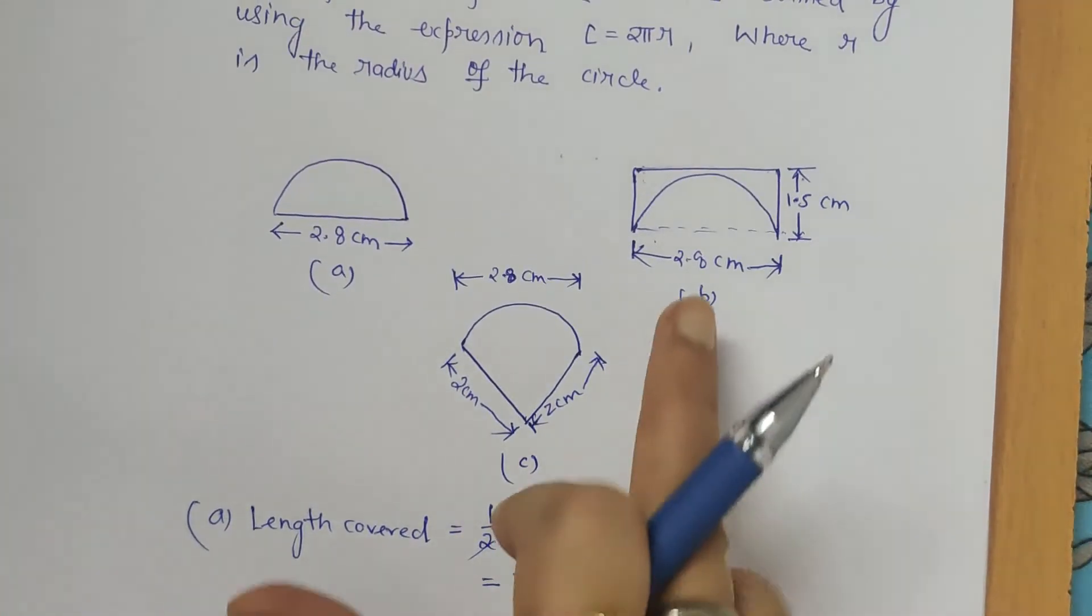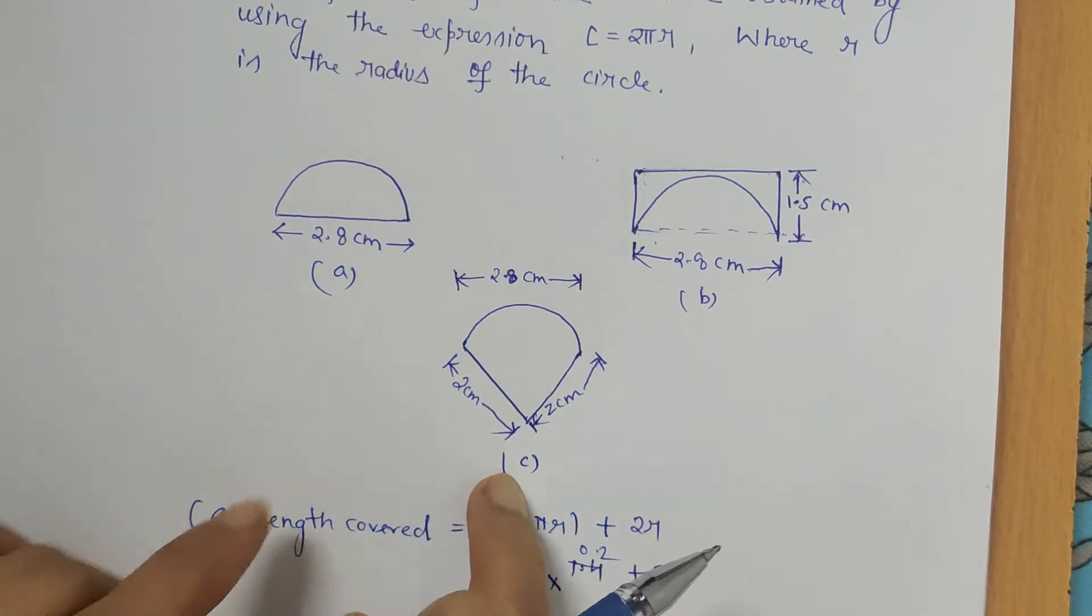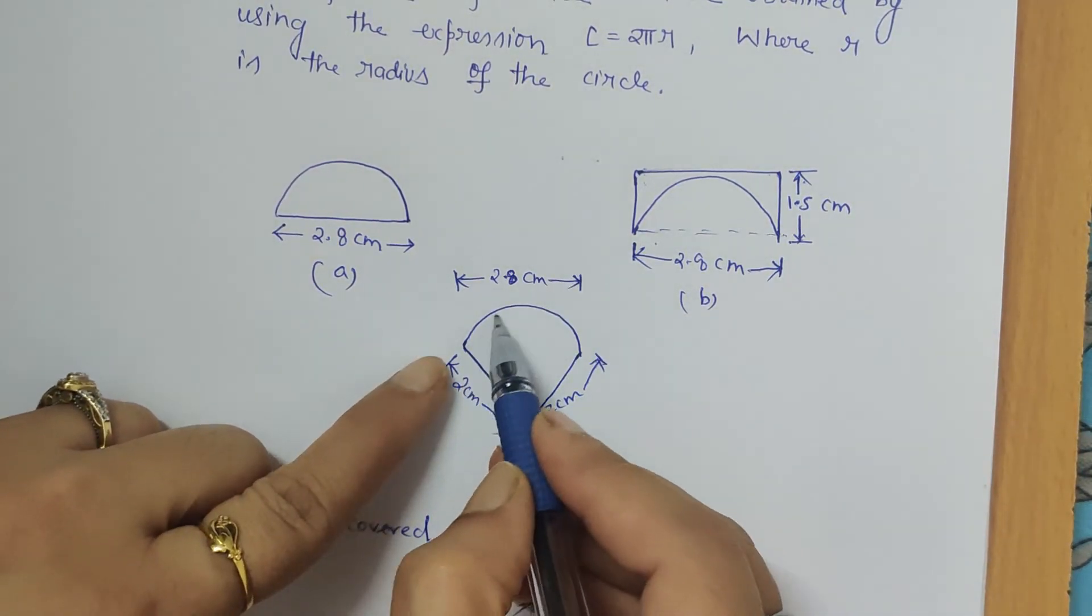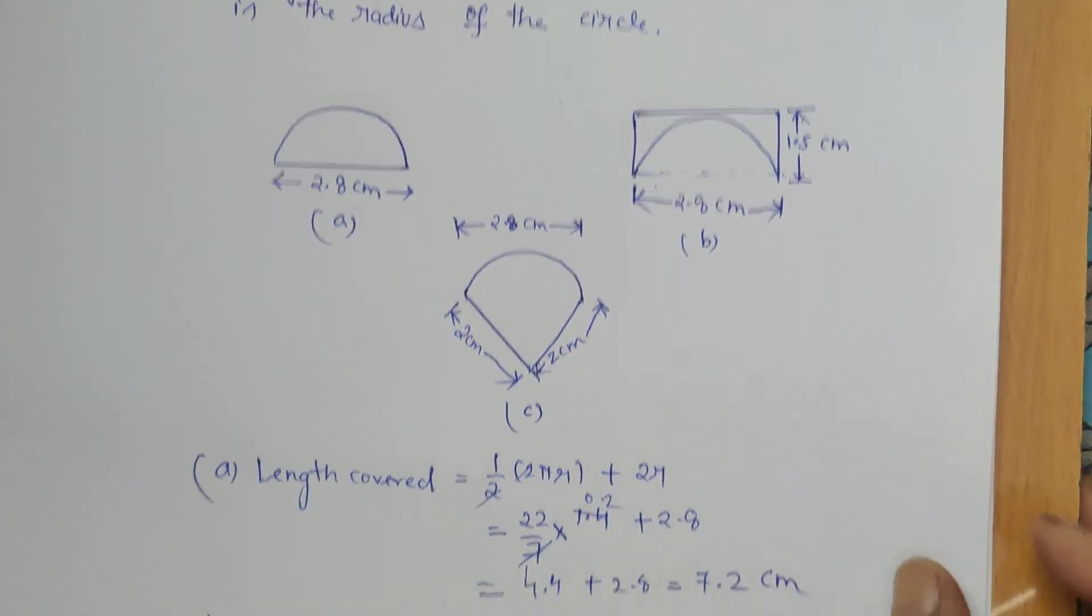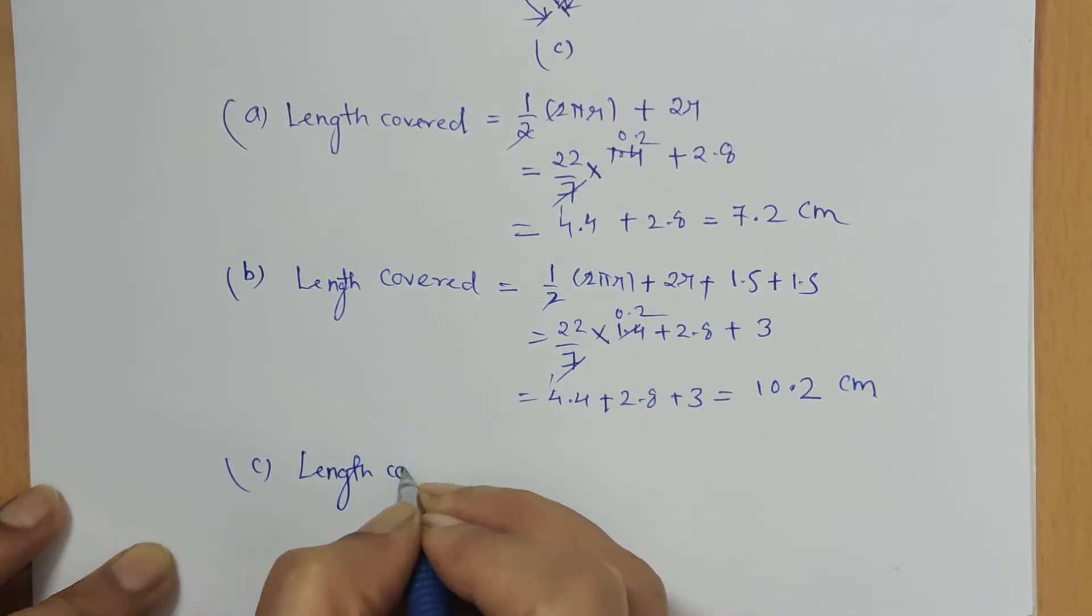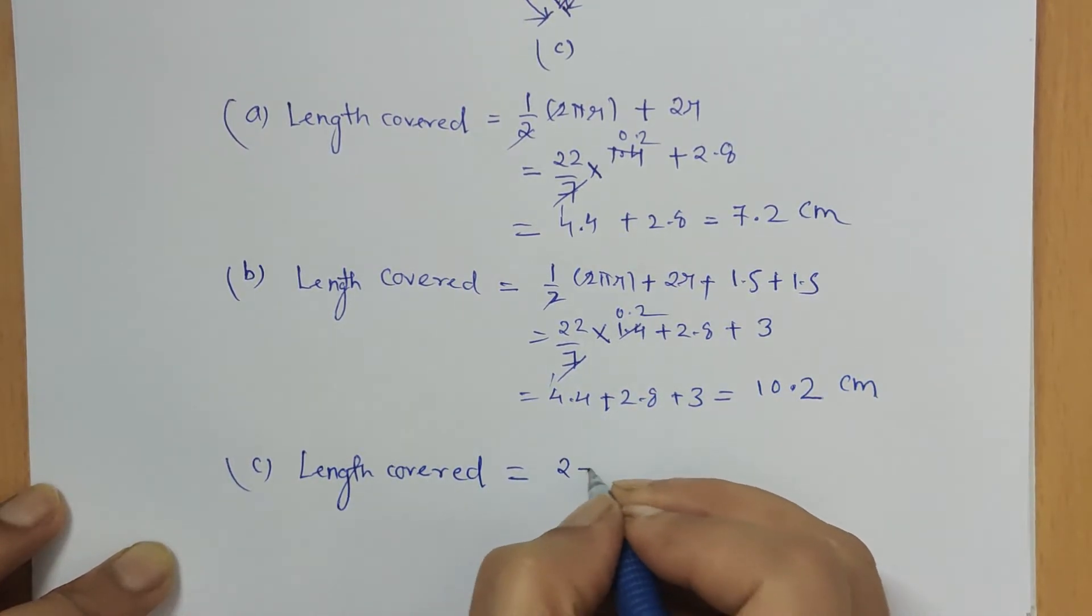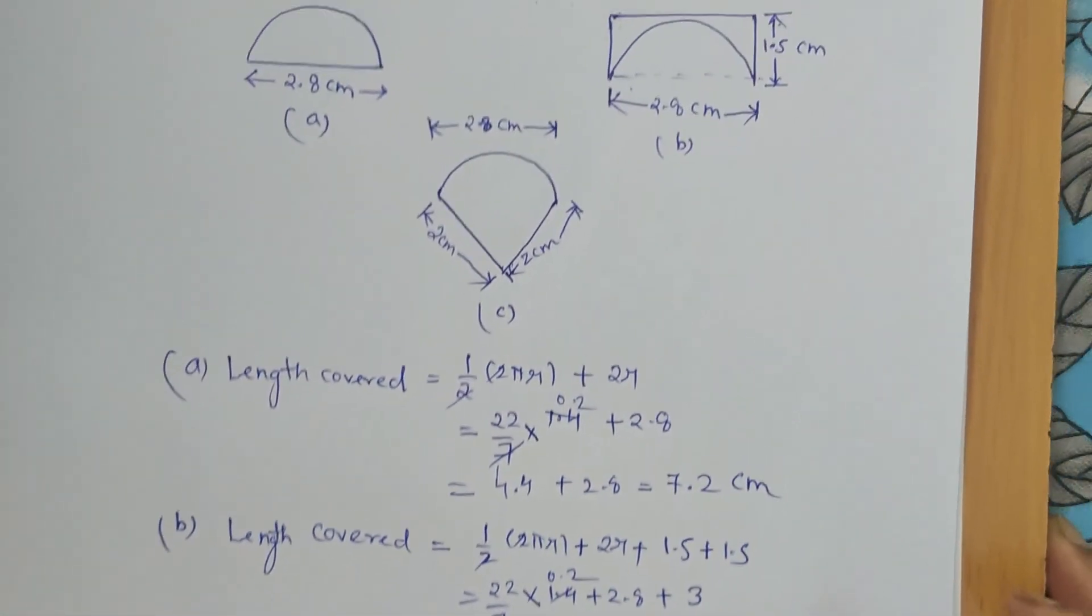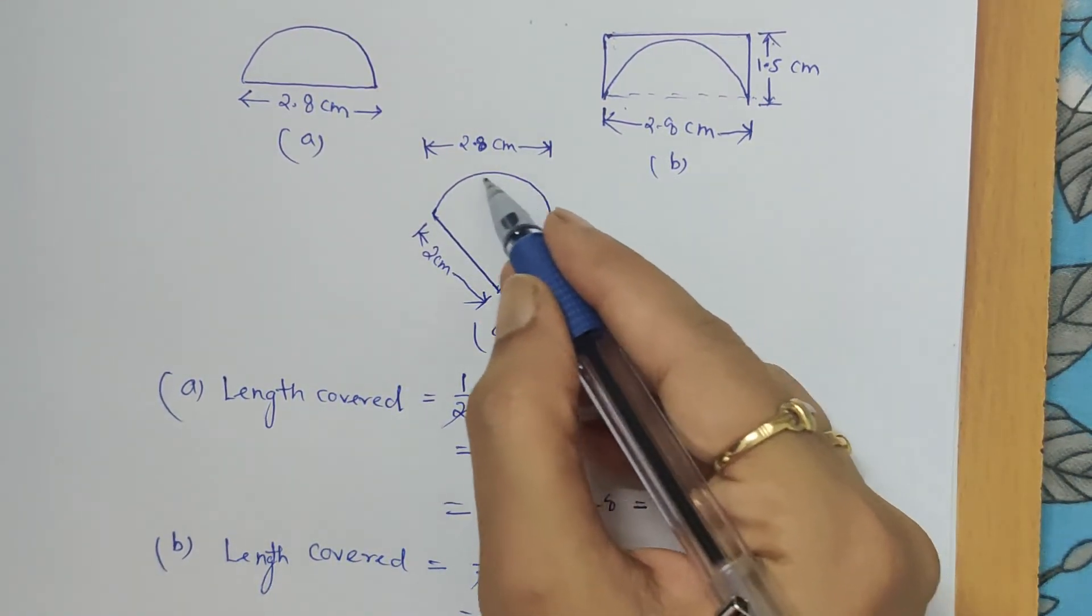Now let's calculate length covered by the ant in food piece C. So here again we have a semicircle, so half of 2πr, and then these two lengths, 2 plus 2. So very easily we can calculate it. Length covered for food piece 3 is 2 plus 2, as it is clear from the figure. The ant is traveling like this, so 2 plus 2.